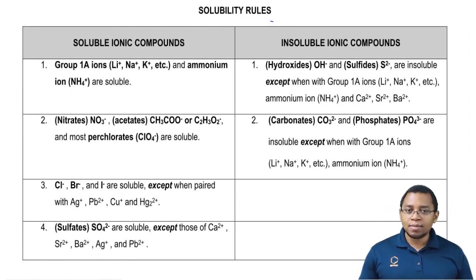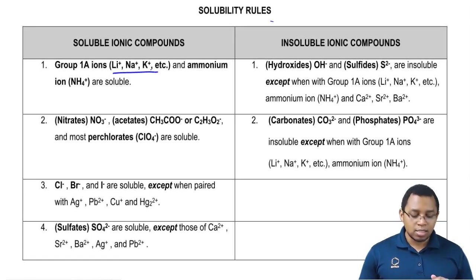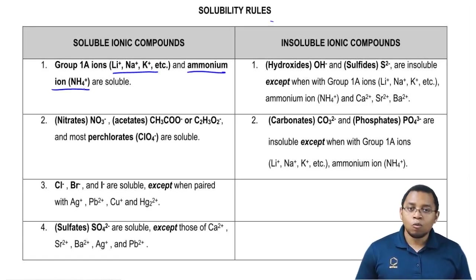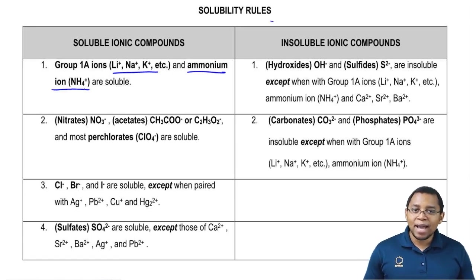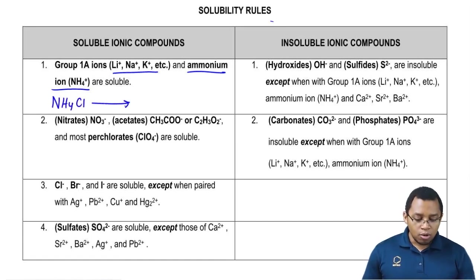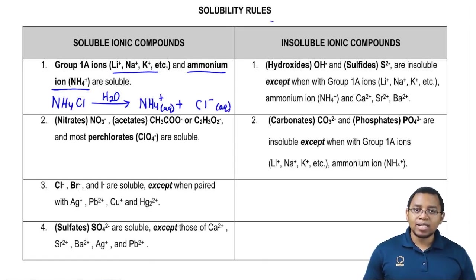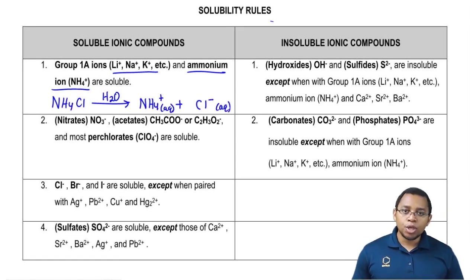Group 1A ions — H⁺, Li⁺, Cs⁺, Na⁺, K⁺ — or ammonium, which is a polyatomic ion, when they're connected to someone else, that compound will always be soluble. For example, if I had NH4 connected with Cl, soluble means when I throw it into water it's going to break up into ions: NH4⁺ aqueous plus Cl⁻ aqueous. It breaks up into the ions that were present before we threw it into the water.